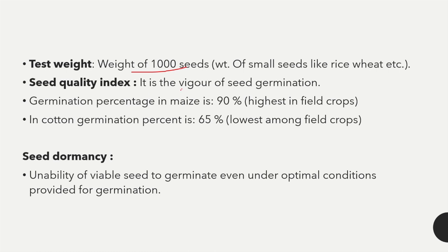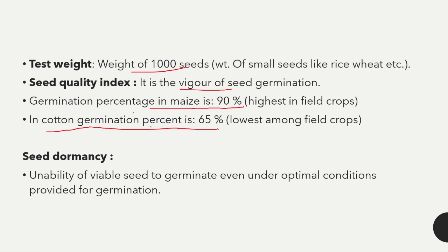Next is seed quality index — it is the vigor of seed germination. The germination percentage in maize is 90 percent, the highest in field crops, while in cotton it is 65 percent, the lowest among field crops.